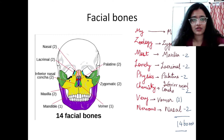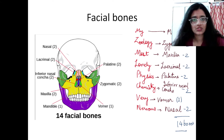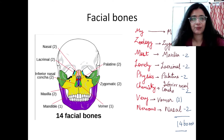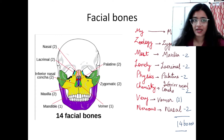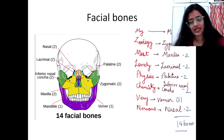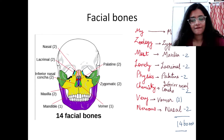Exam questions often give you a set of bones and ask which are paired or unpaired. The facial bones total 14, which you can remember simply as 'facial 14.'